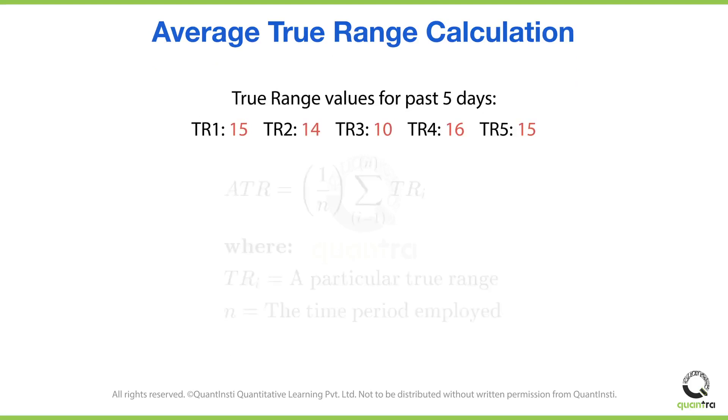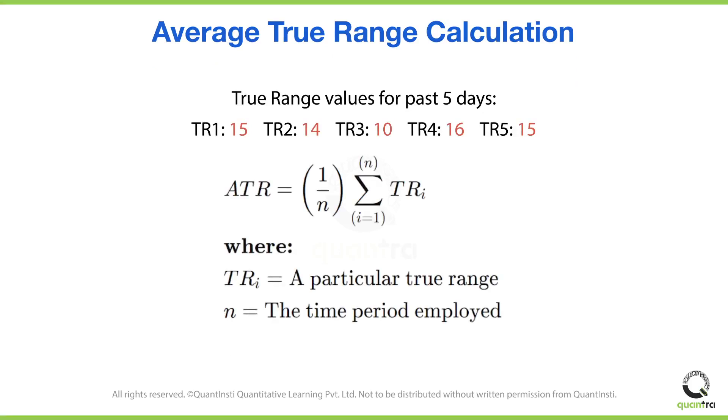We can achieve this by using this formula. The formula simply states that in order to find the average true range value for n number of days, we can simply add up all the true range values and then divide this total by the total number of days, which in this case is n.